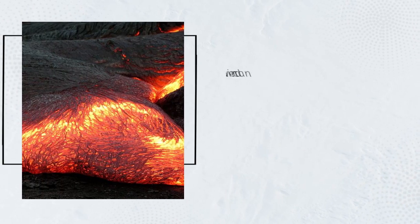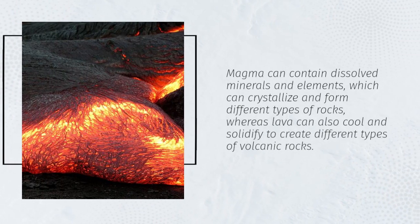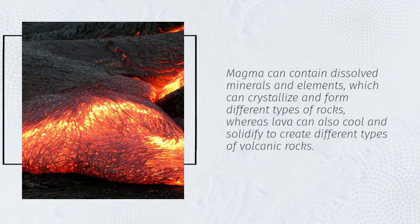Magma can contain dissolved minerals and elements, which can crystallize and form different types of rocks, whereas lava can also cool and solidify to create different types of volcanic rocks.